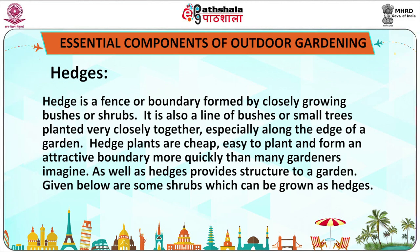The first element of outdoor gardening is hedges. A hedge is a fence or boundary formed by closely growing bushes or shrubs. It is also a line of bushes or small trees planted very closely together, especially along the edge of a garden. Hedge plants are very cheap, easy to plant and form an attractive boundary more quickly than many gardens. Hedges also provide structure to a garden.